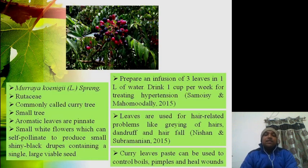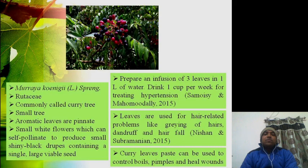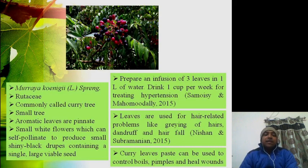Besides this, the leaves are used for hair-related problems like graying of hair, dandruff, and hair fall. Those can be taken care of with the help of the leaves of Murraya koenigii. Curry leaf paste can also be used to control boils, pimples, and aid in healing wounds. So there are a lot of medicinal properties associated with this plant for treating various kinds of diseases and disorders.